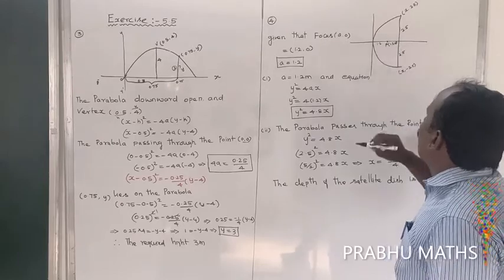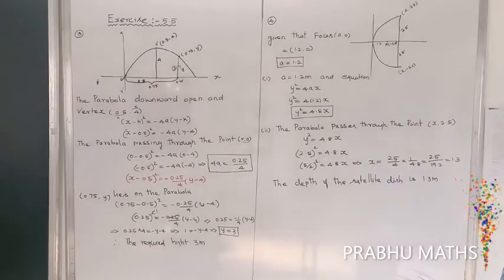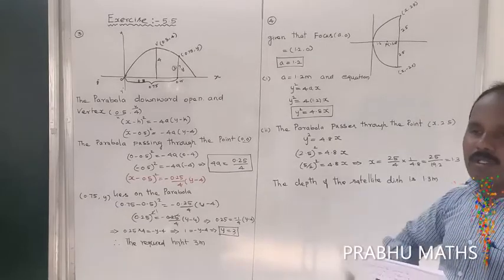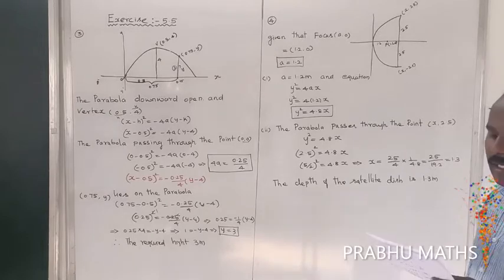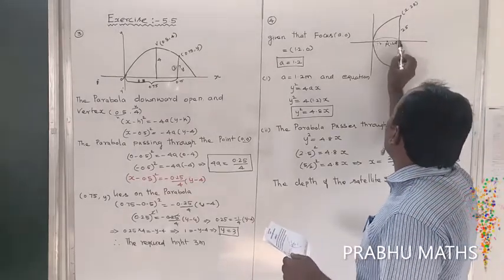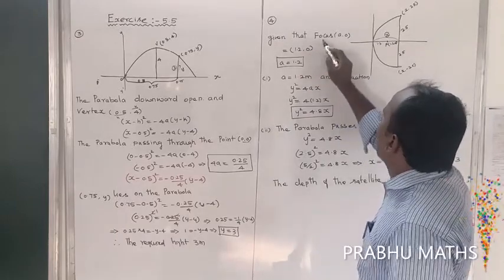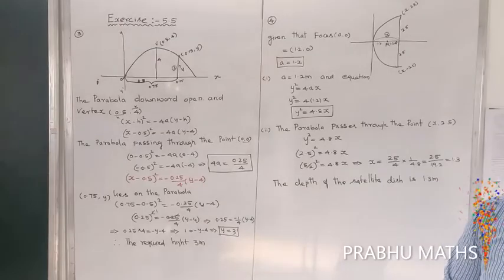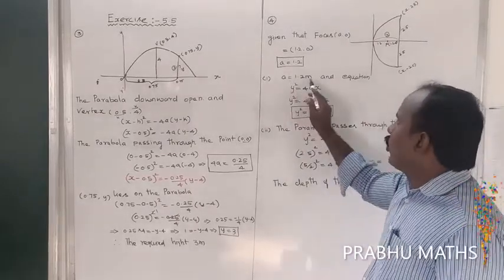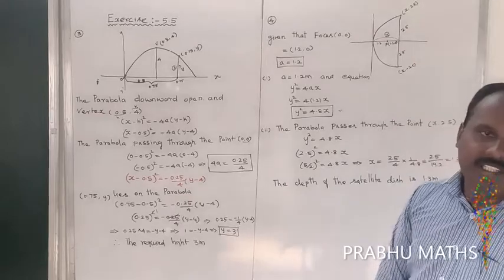Setting up the coordinate system with the origin at the vertex and the x-axis as the axis of symmetry. For a right-side open parabola, the focus is at (a, 0), so a = 1.2. Therefore the equation is y² = 4ax, which gives y² = 4.8x. That completes the first part.